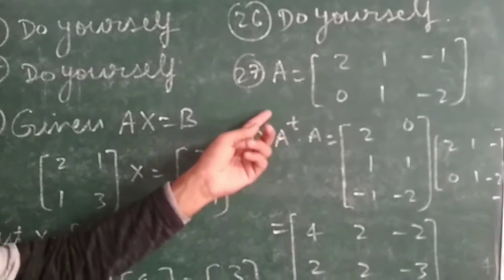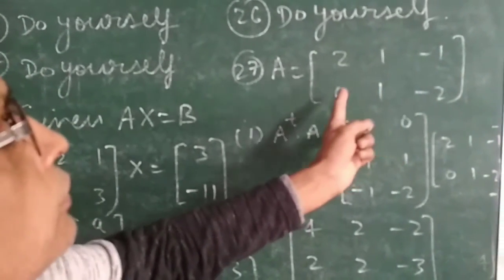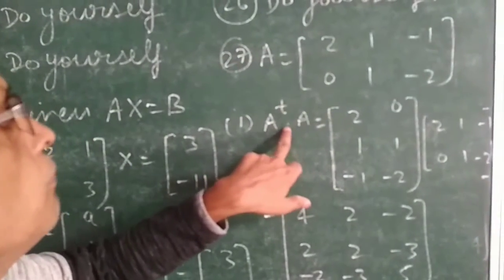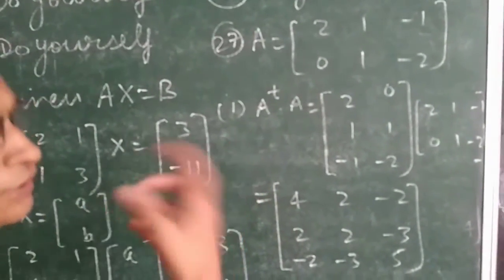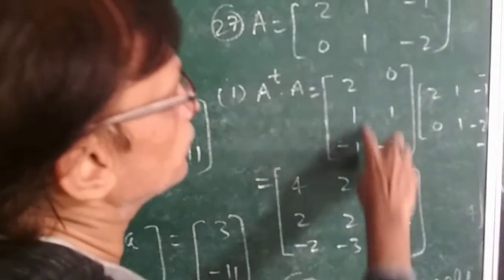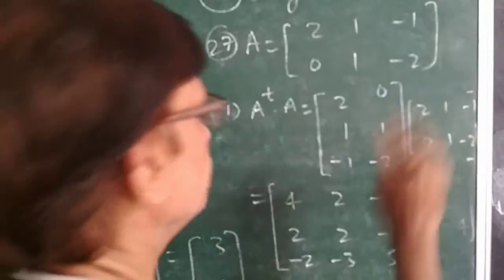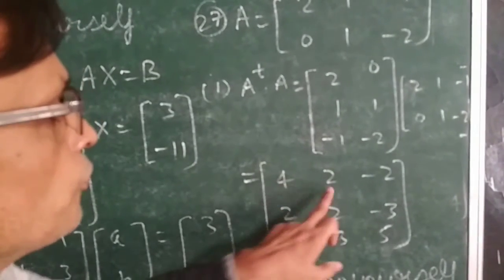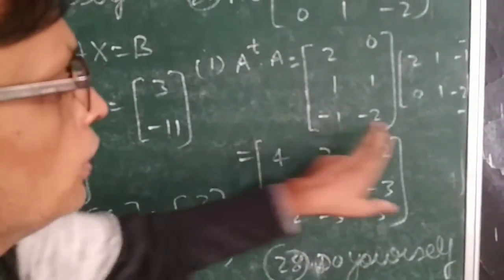Now question 27a. We are given matrix A = [2, 1, -1; 0, 1, -2]. First part: we have to find A-transpose multiplied by A. First we write A-transpose — to write the transpose, we convert rows into columns. So the first row becomes the first column and the second row becomes the second column. Now multiply A-transpose with A. Following the rule of matrix multiplication, we get the matrix [4, 2, -2; 2, 2, -3; -2, -3, 5]. This is the final answer for the first part.